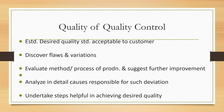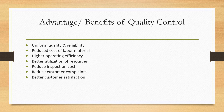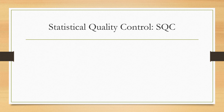Objectives of quality control: it establishes desired quality standards acceptable to customers, discovers flaws and variations, evaluates methods and processes of production and suggests further improvements, analyzes in detail the causes responsible for deviations, and helps to undertake steps helpful in achieving the desired quality.